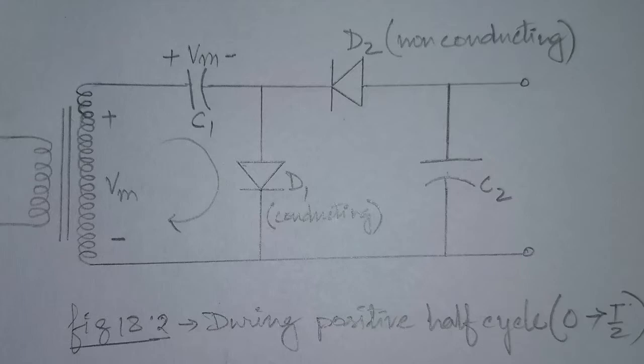On the next positive half cycle, diode D2 is non-conducting and capacitor C2 will discharge through the load. If no load is connected across the capacitor C2, both the capacitors stay charged, that is, C1 to Vm and C2 to twice Vm.